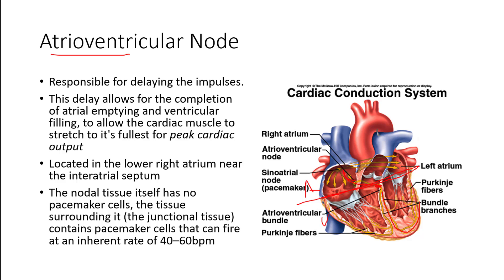The AV node is really important for giving the ventricles enough time to fill, so we get the most effective stroke volume, which contributes to our cardiac output. The tissue surrounding the AV node, called junctional tissue, also contains pacemaker cells. So just like everything in our body, we have redundancies: if the SA node fails — due to fibrosis, age, ischemia, or any reason — the AV node can potentially take over and set the pace, although it will be a little slower. Sometimes that's pathological, but the SA node normally sets the tone when healthy.